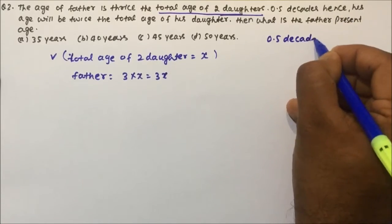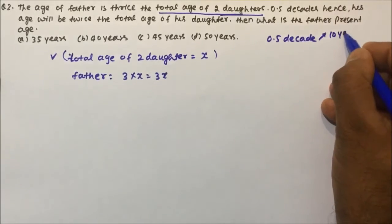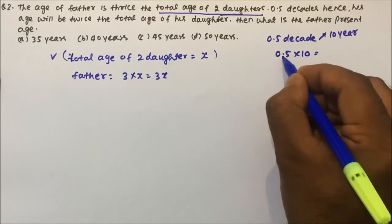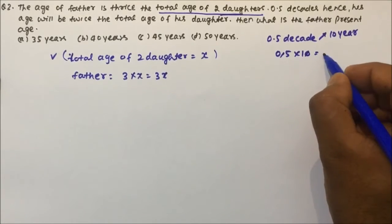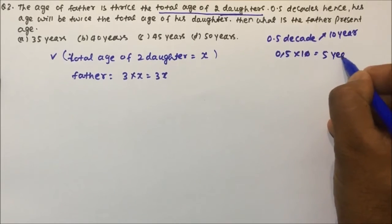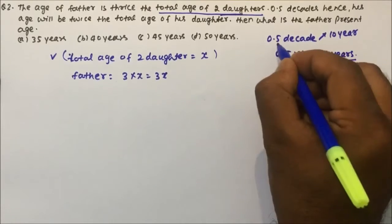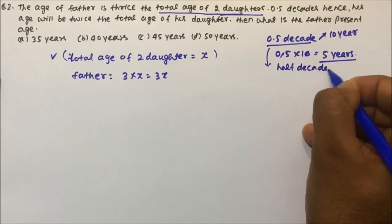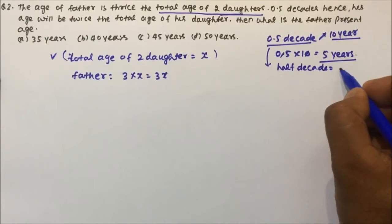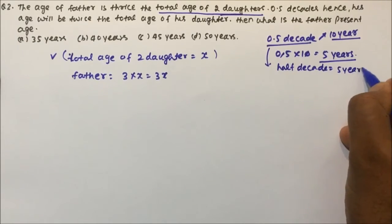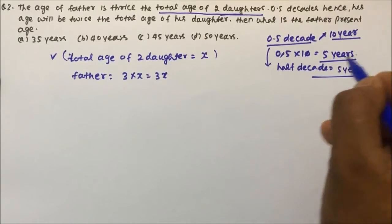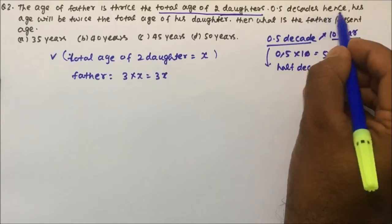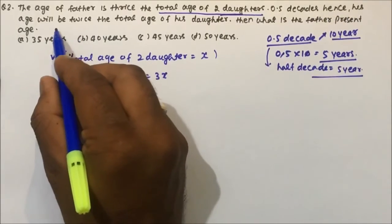Let's clarify what 0.5 decades means. In one decade there are ten years, so 0.5 into ten means five years. Half a decade — since a full decade is ten years — half a decade is five years. So 0.5 decade hence means five years from now.